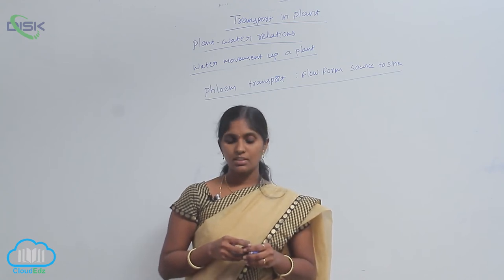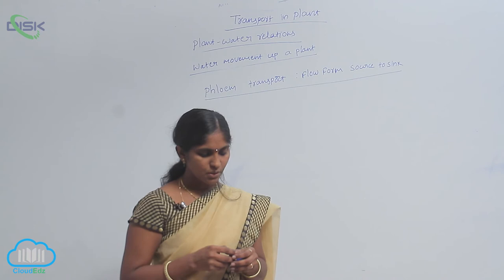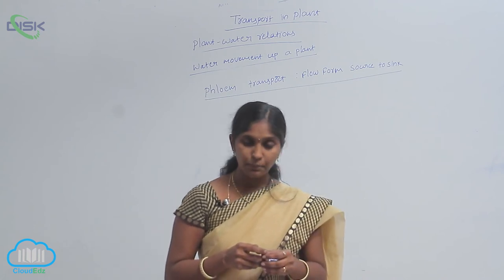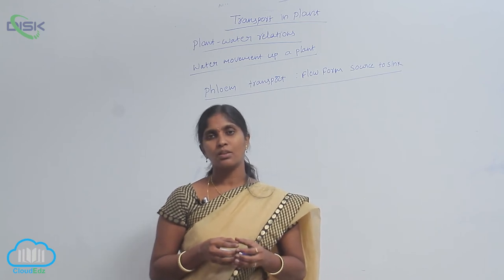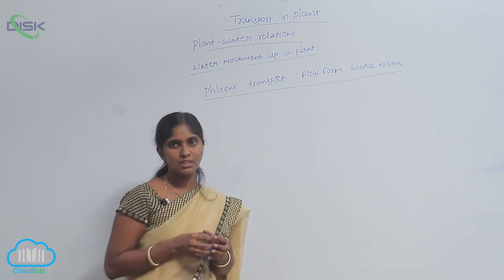This hypothesis is explained by Munch. According to this hypothesis, how does the translocation of sugars from leaves to other parts occur?